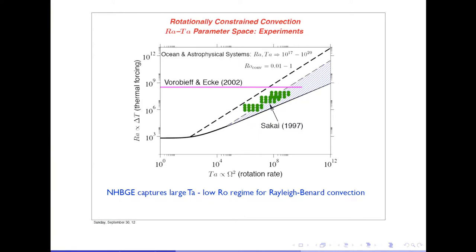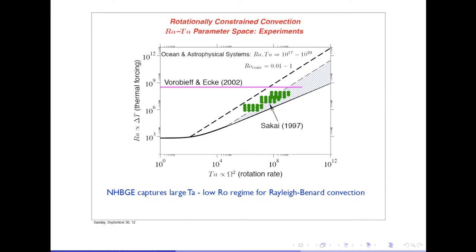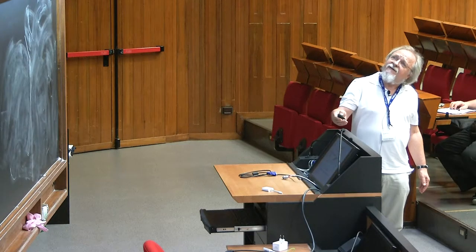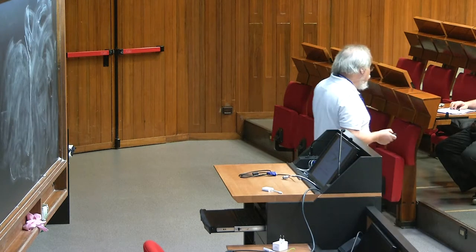In the low Rayleigh number region, the Rayleigh number is not sufficient, so I have conduction. When I cross the black line, convection sets in. Convection is delayed by rotation — rotation is stabilizing, so I have to heat more to get convection. I'm going to be interested in the region that's strongly affected by rotation, where the so-called convective Rossby number is substantially less than one.